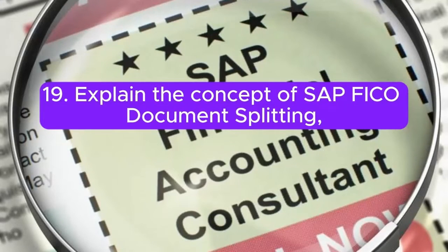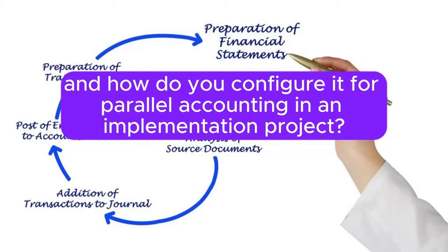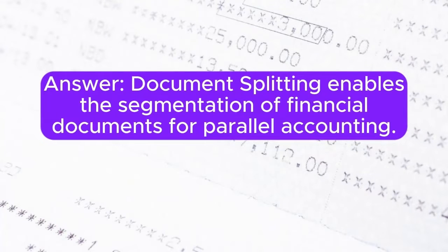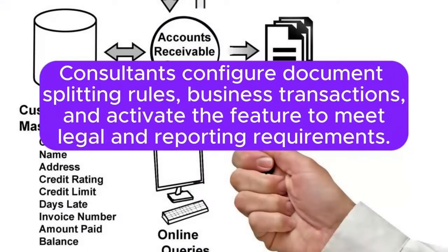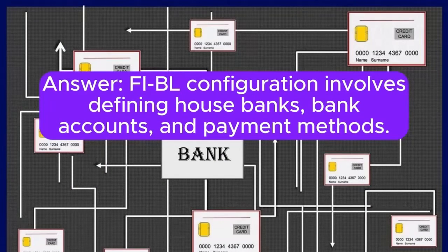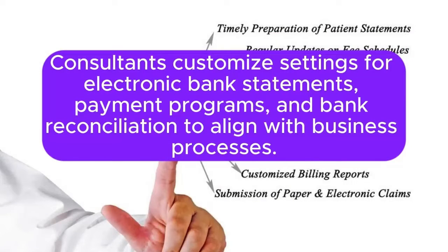Question 19: Explain the concept of SAP FICO document splitting, and how do you configure it for parallel accounting in an implementation project? Document splitting enables the segmentation of financial documents for parallel accounting. Consultants configure document splitting rules, business transactions, and activate the feature to meet legal and reporting requirements. Question 20: How do you approach SAP FICO Bank Accounting (FI-BL) configuration, and what considerations are important for bank-related settings? FI-BL configuration involves defining house banks, bank accounts, and payment methods. Consultants customize settings for electronic bank statements, payment programs, and bank reconciliation to align with business processes.